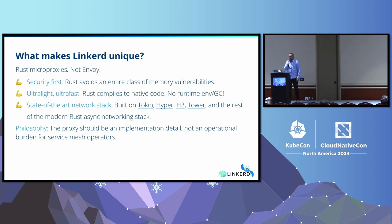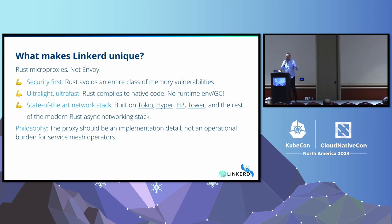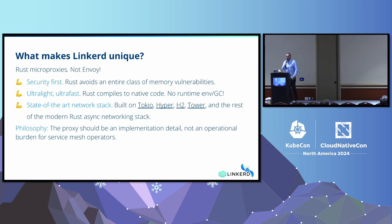The thing that makes us really unique on the implementation side is we don't use Envoy as a proxy. We build these things we call micro-proxies — not my favorite term, but it does about 20% of what a full-fledged proxy does. We build them in Rust, so we get a bunch of nice security benefits. We avoid a whole class of memory safety vulnerabilities. Rust is super fast, and we get access to a great async network stack.